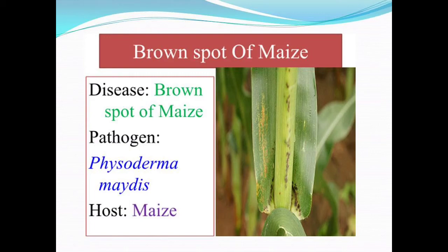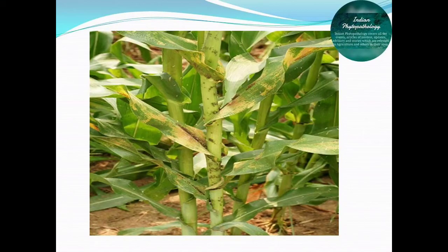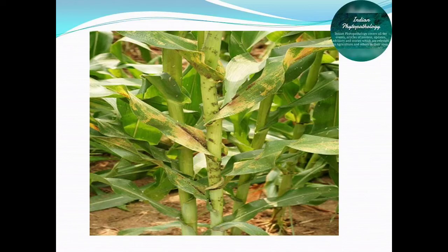Now we will see the symptoms of brown spot of maize. Lesions occur mainly on the leaf but may also occur on leaf sheaths, stalks, outer ear husks, and tassels, producing small round to oblique or chocolate brown to reddish-brown spots which may merge together to form large brown blotches. On midribs, spots are circular and dark brown in color. Here you can see in images the midrib consisting of blackish-colored dots, showing the symptoms of brown spot of maize caused by Physoderma maydis. The stalk is completely infected and the inner midrib portion is completely destroyed due to the infection.